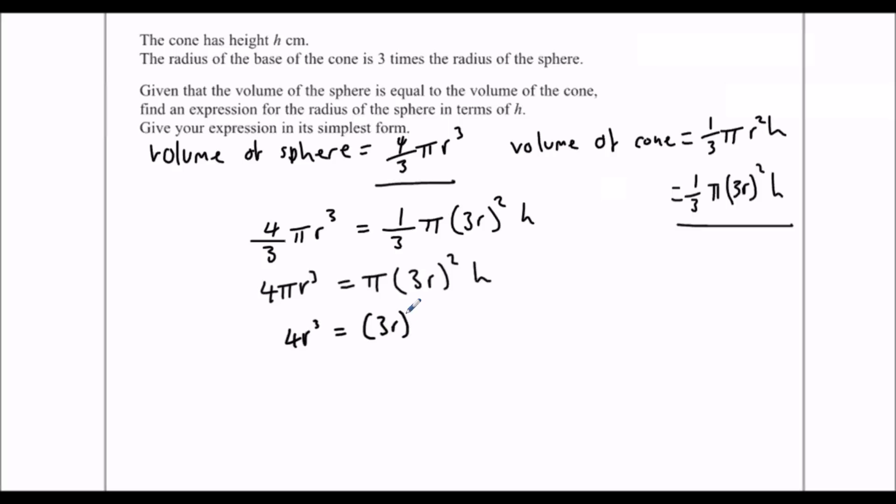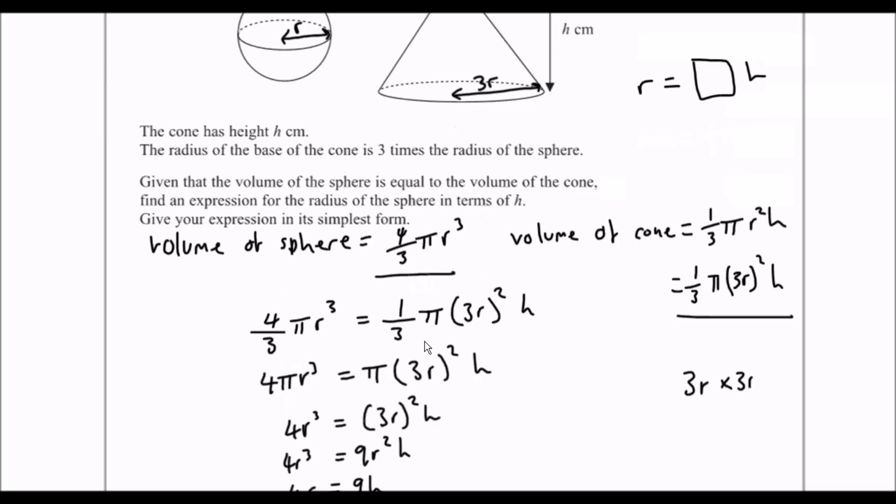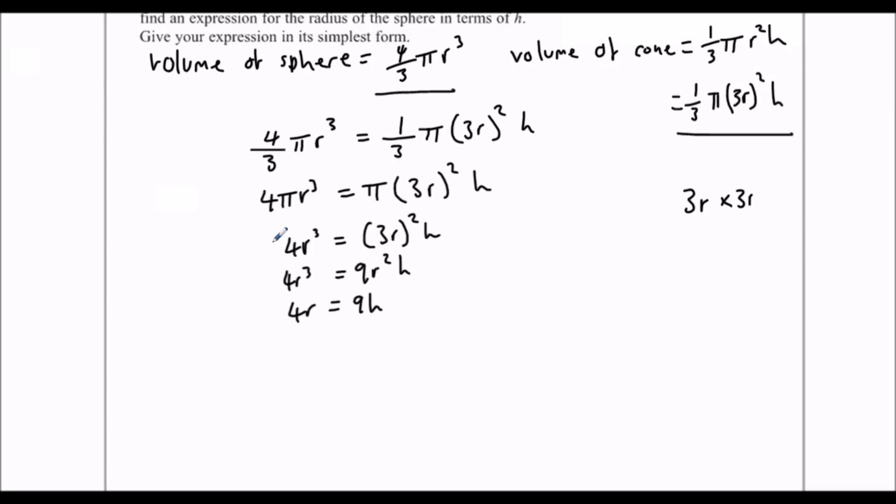3r squared means 3r times 3r, so that's 9r squared h. Divide through by r squared. It's going to be 4r equals 9h. And I want r equals something, so all I've got to do is divide by 4. And that's it. That's my final answer.